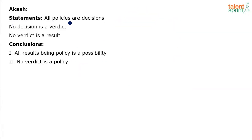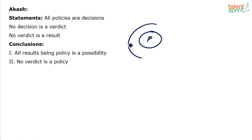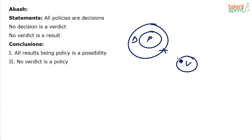Look at the statements: all policies are decisions, no decision is a verdict, no verdict is a result. Draw the basic diagram. All policies are decisions — policies sit inside decisions. No decision is a verdict — decision and verdict will not touch each other. We put a cross mark on these two sets to indicate they cannot overlap.